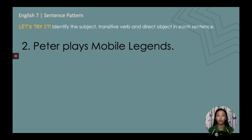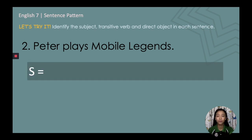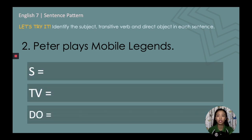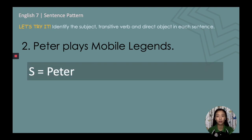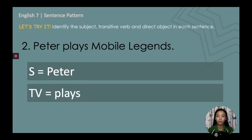Number two: 'Peter plays Mobile Legends.' Pause this video as you try to identify the subject, transitive verb, and direct object. The subject is Peter. The transitive verb is 'plays.' And the direct object is 'Mobile Legends.'